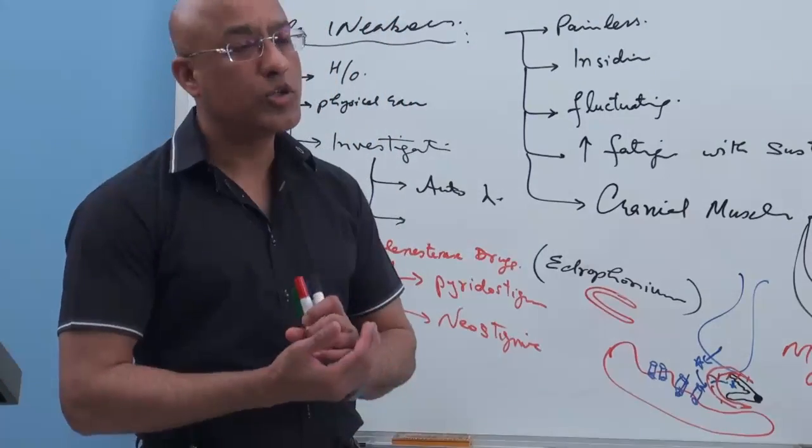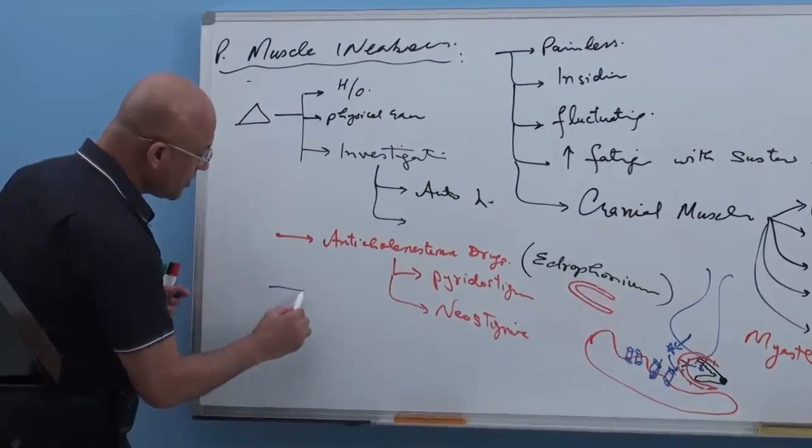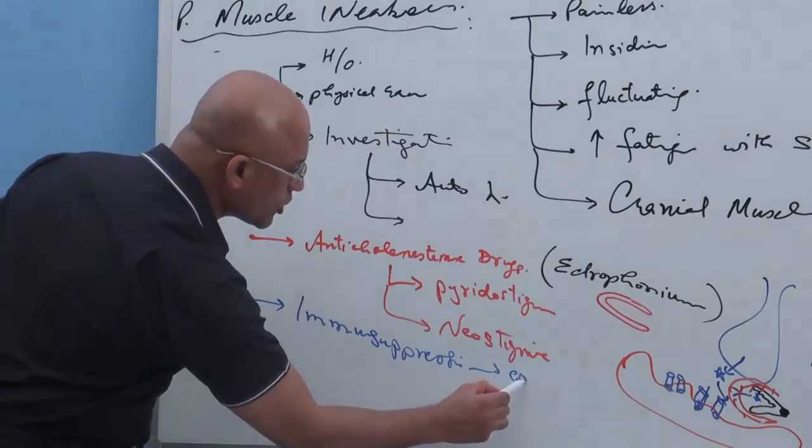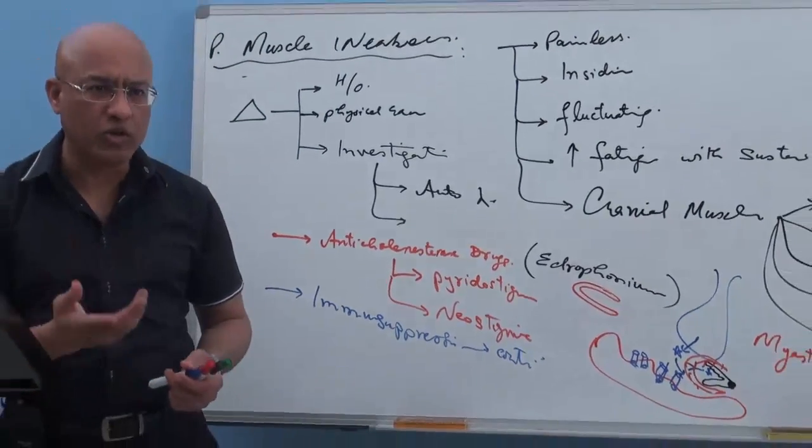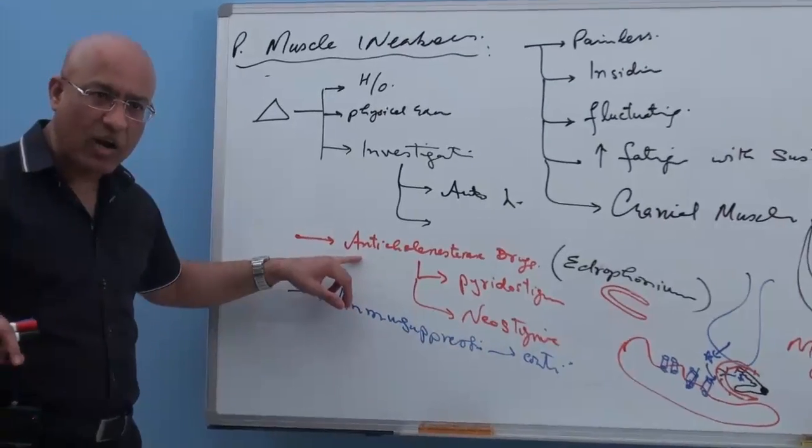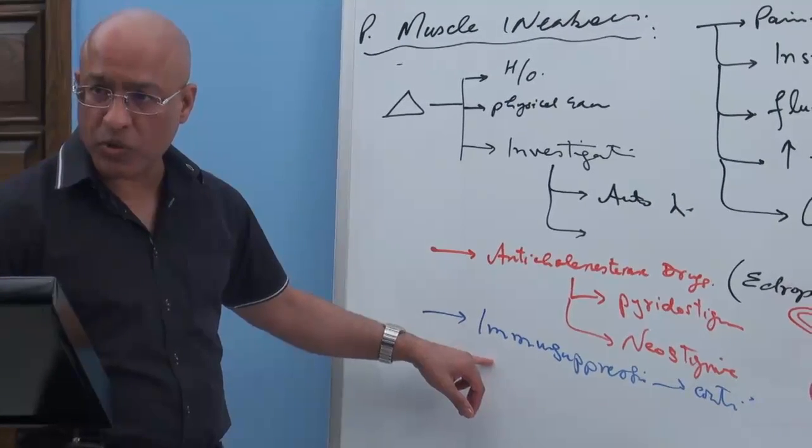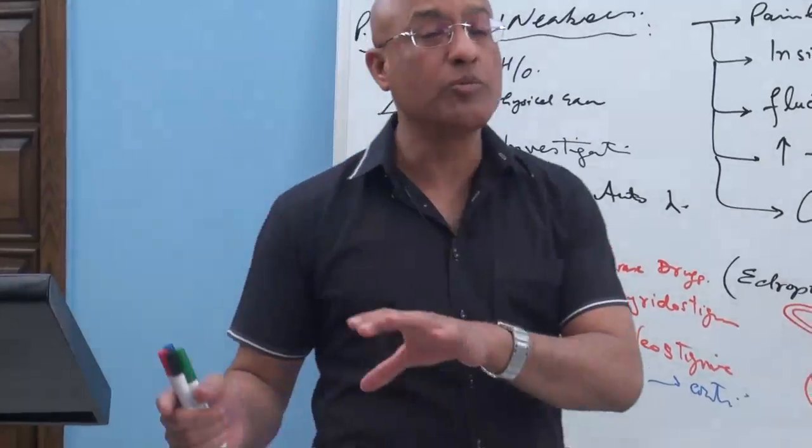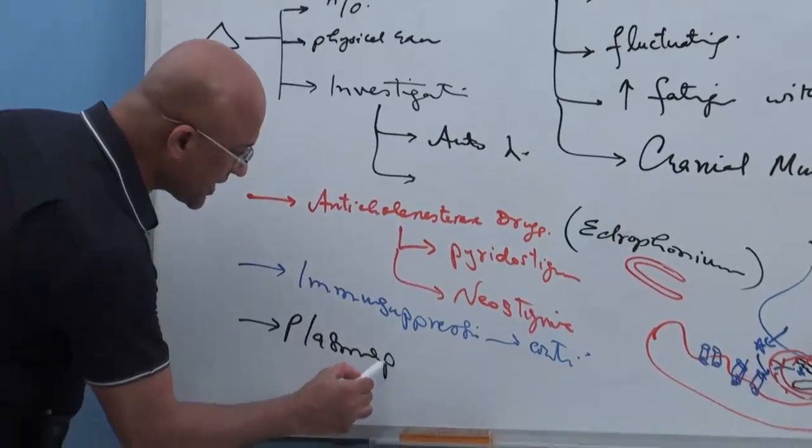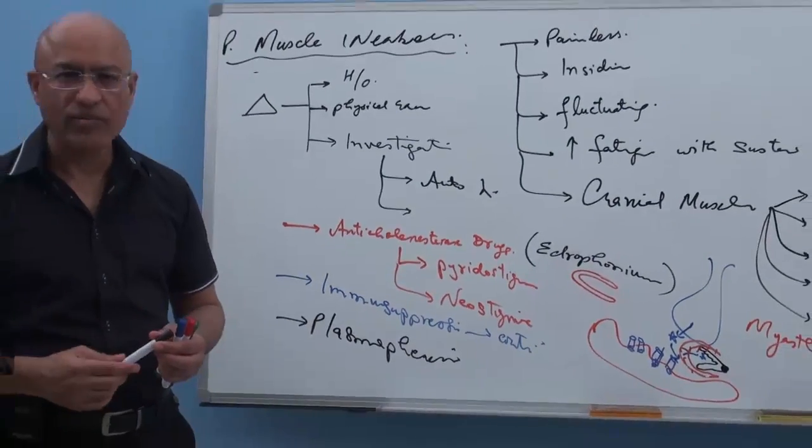Then another way to treat this patient is reduce the production of autoantibodies. For that purpose, we can give drugs which are immunosuppressive. And immunosuppressive drugs like corticosteroids, and with them we can give azathioprine or cyclosporine or there are many other immunosuppressive drugs. So either we give anti-cholinesterases or with that, if anti-cholinesterases are not helping much, you can give immunosuppressive drugs so that production of autoantibodies is reduced. And if patient is really very weak, you can remove the autoantibodies out of the person's circulation, and for that purpose we do plasmapheresis, a mechanism by which we remove the autoantibodies from the patient.